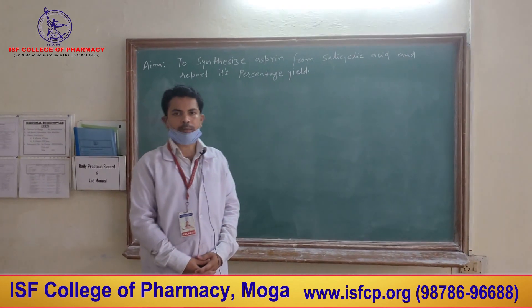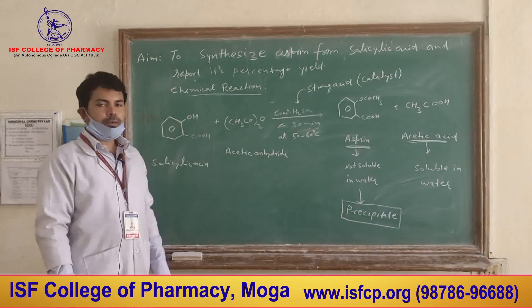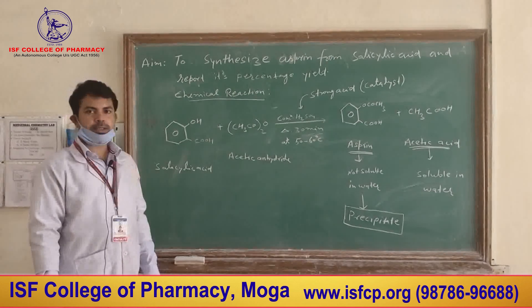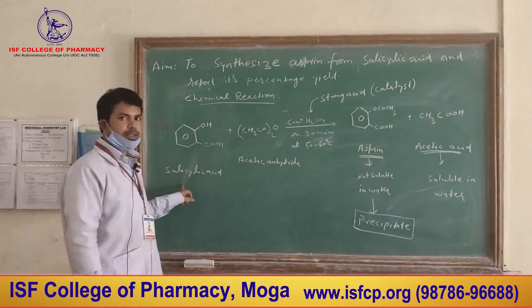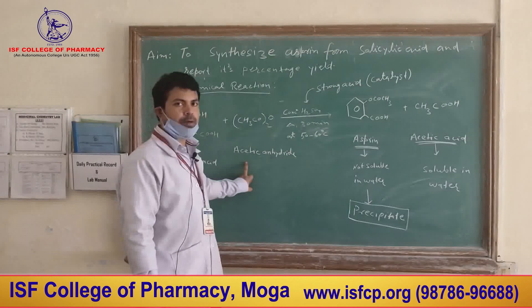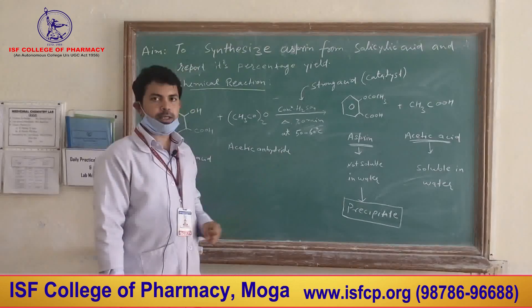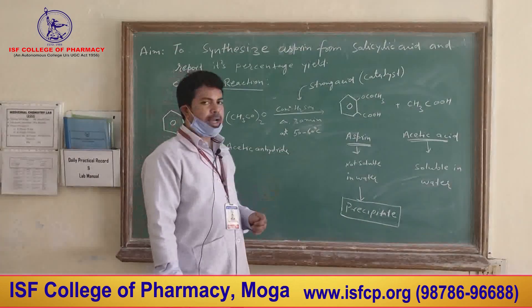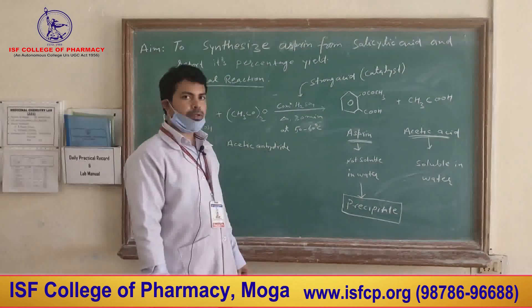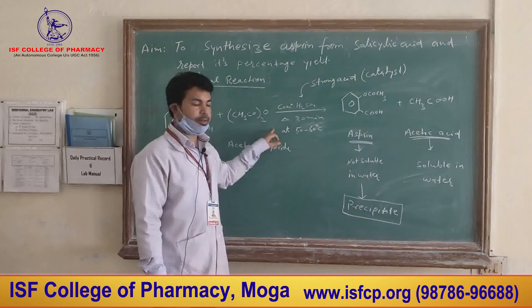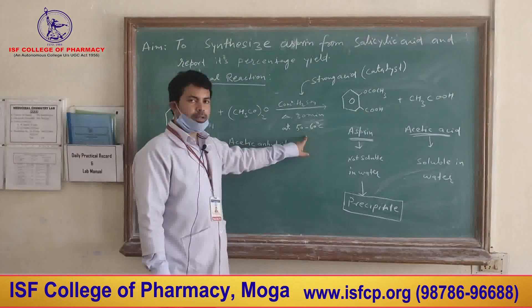Now I will discuss the chemical reaction behind this synthesis. To prepare aspirin from salicylic acid, we use two chemicals. Salicylic acid reacts with an excess amount of acetic anhydride in the presence of a strong acid catalyst, such as phosphoric acid or concentrated H₂SO₄. The strong acid acts as a catalyst which speeds up the reaction. In this experiment, we use concentrated H₂SO₄ as catalyst and heat the mixture at 50 to 60 degrees centigrade on a water bath for 30 minutes.